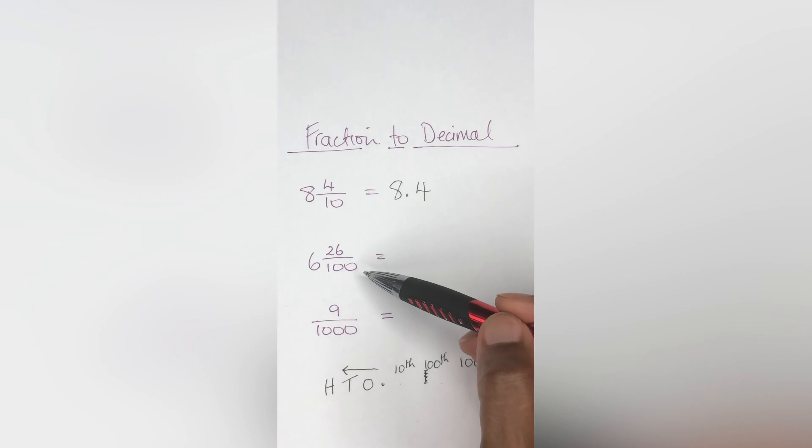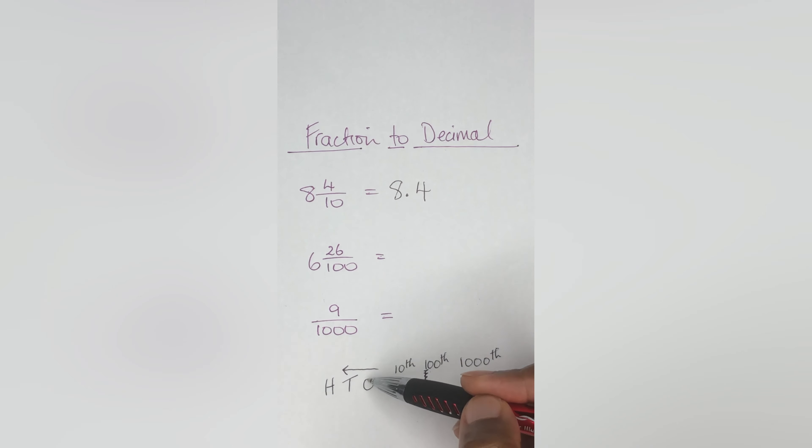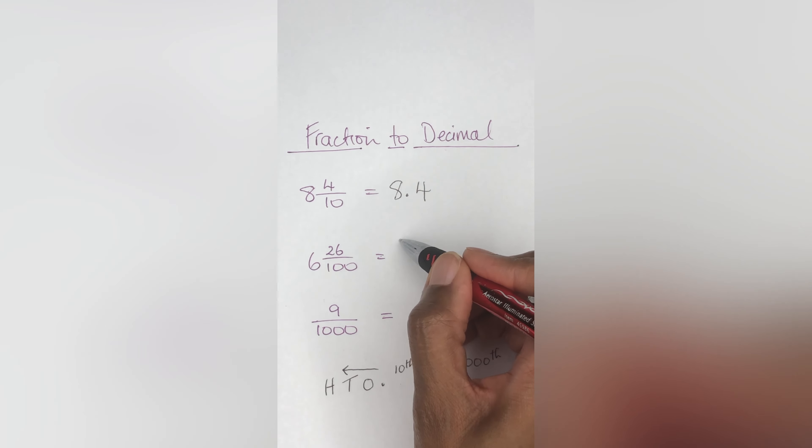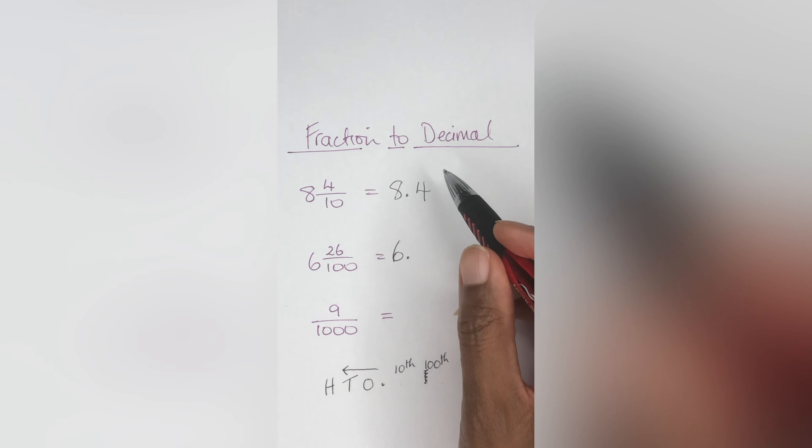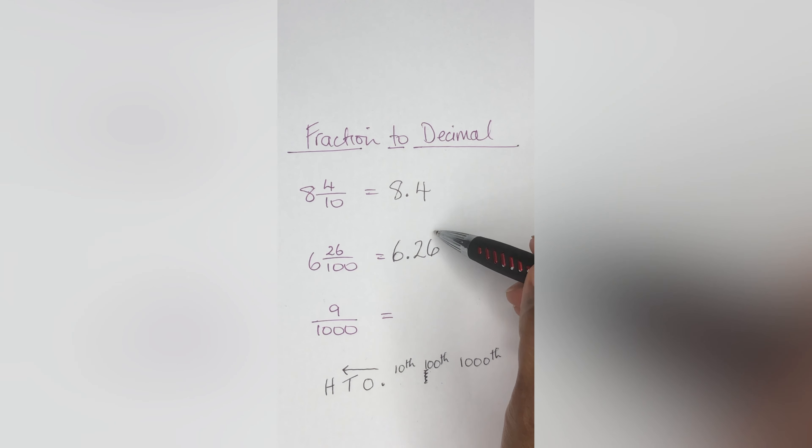Let's look at the next one: six and 26 hundredths. This is the whole number, so we don't change that because it's in the ones place. Six is the whole number and 'and' is your decimal. 26 hundredths, you're going to write 26 here because the number ends in the hundredth place. So six and 26 hundredths.